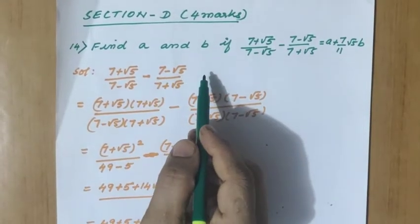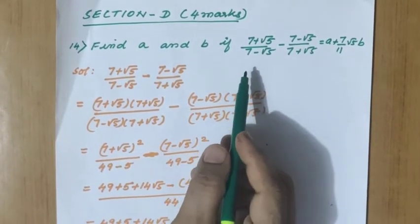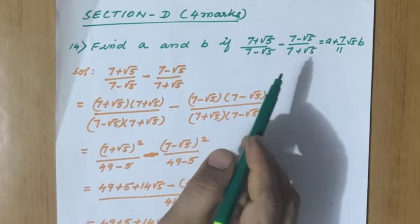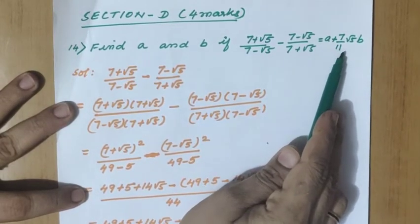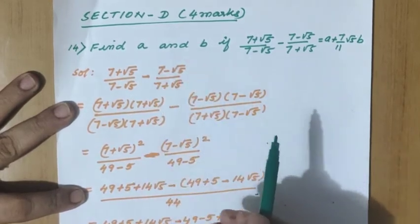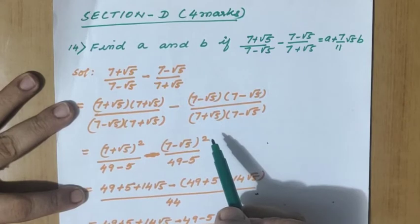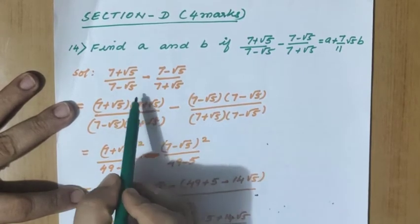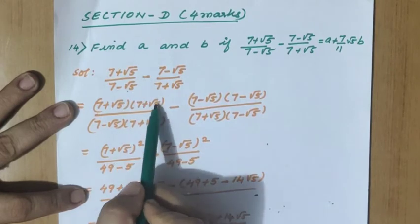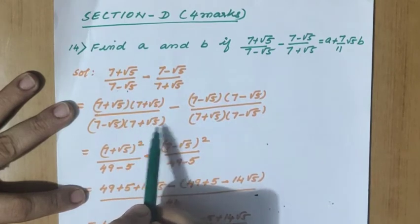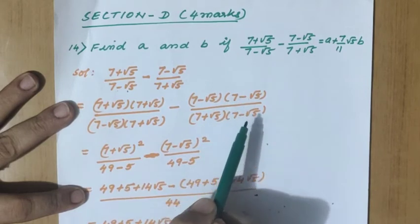Section D — four-mark questions have started. Find A and B if 7 plus root 5 divided by 7 minus root 5 minus 7 minus root 5 divided by 7 plus root 5 equals A plus 7 by 11 root 5 times B. This is based on rationalizing the denominator.